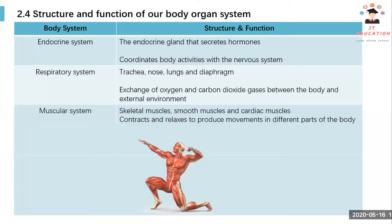Then we have the muscular system. The muscular system contains skeletal muscle, smooth muscle, and cardiac muscle, which contract and relax to produce movement of different parts of the body — for example, playing basketball or swimming, all of which involve the muscular system.